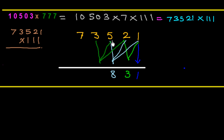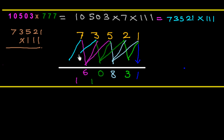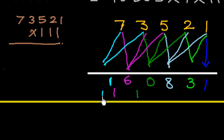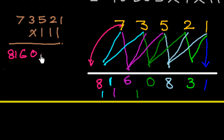Continuing 73521 × 111: 3 + 5 + 2 = 10, write 0 carry 1. Then 7 + 3 + 5 = 15, plus 1 carry = 16, write 6 carry 1. Then 7 + 3 = 10, plus 1 = 11, write 1 carry 1. Finally, 7 + 1 = 8. So the final answer is 8,160,831. In this way we can easily multiply numbers with a series of similar digits.